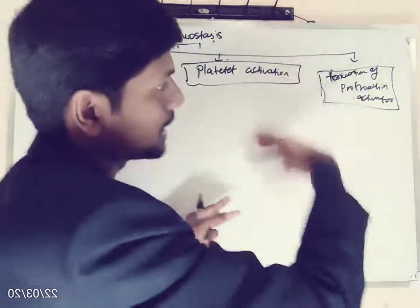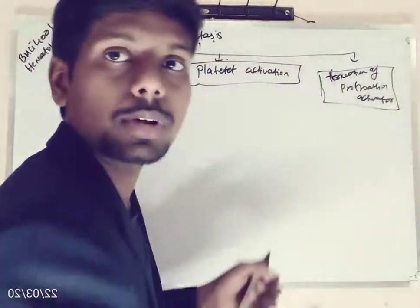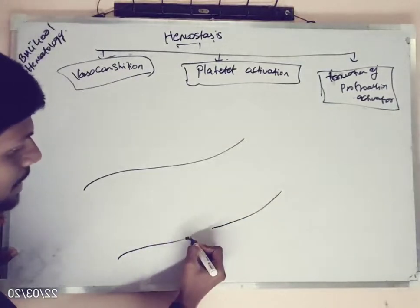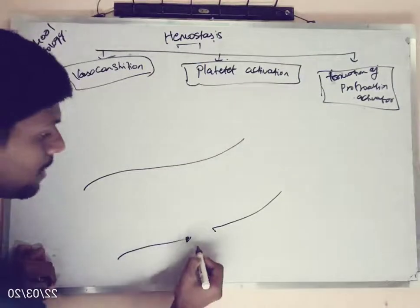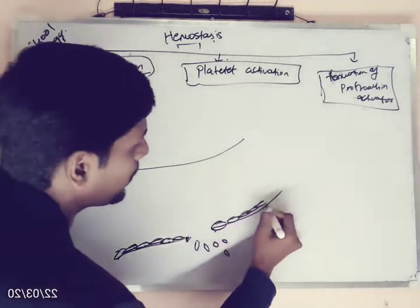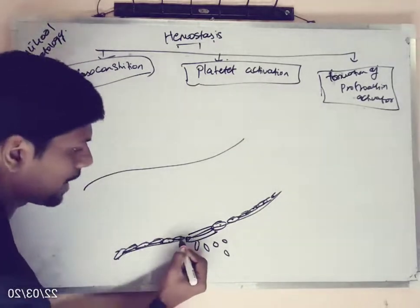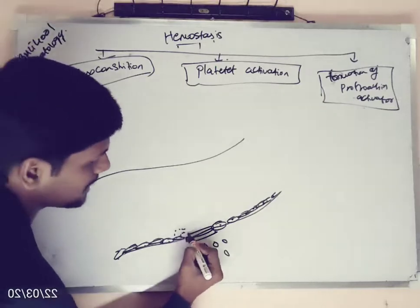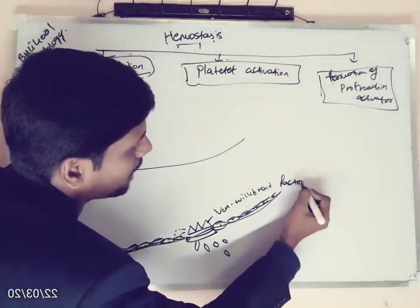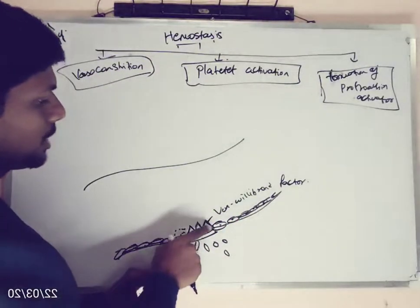These platelets will start aggregating at the site of bleeding and prevent bleeding temporarily. Then they will start synthesizing fibrin using clotting factors, and ultimately the blood will be clotted. Blood vessels are made up of endothelial cells. After damage to the blood vessel, collagen fibers will get exposed. On these collagen fibers, endothelial cells will secrete a factor called von Willebrand factor. Von Willebrand factor will start binding on the surface of the exposed collagen fibers, and then platelets present in the bloodstream will come and bind to the von Willebrand factor.